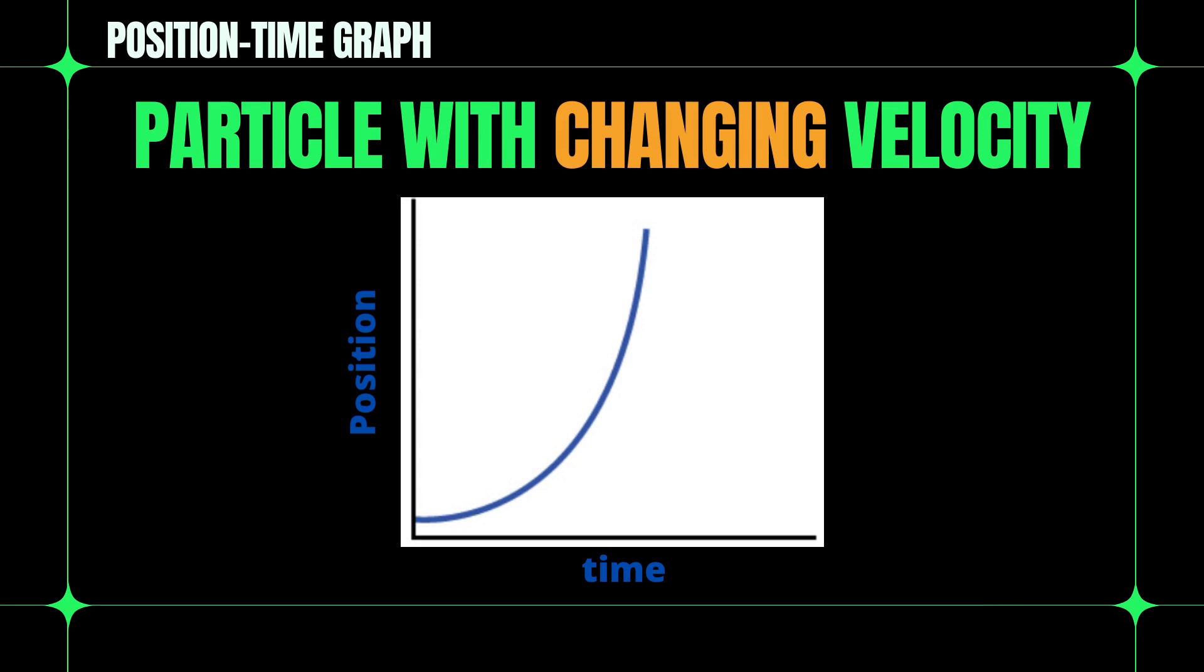This graph shows a particle with changing velocity. A particle having a varying or changing velocity, which means accelerating, exhibits a curved line.